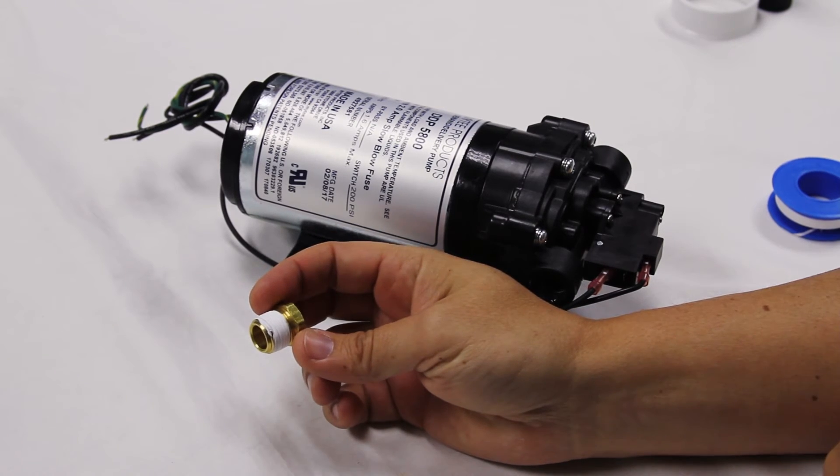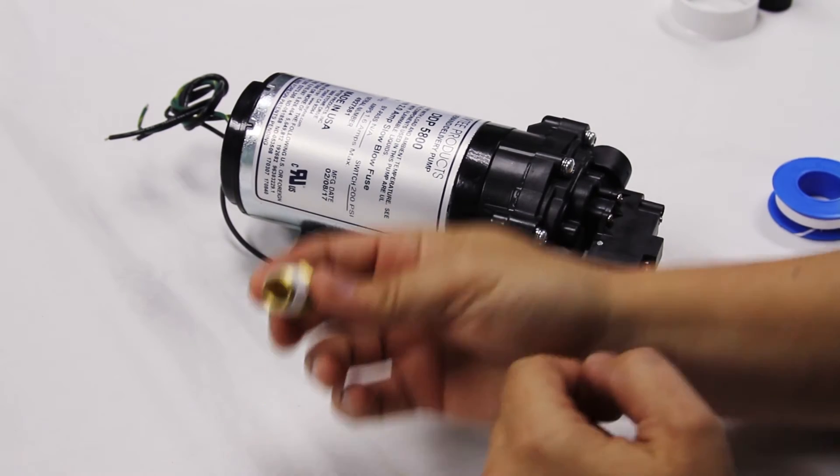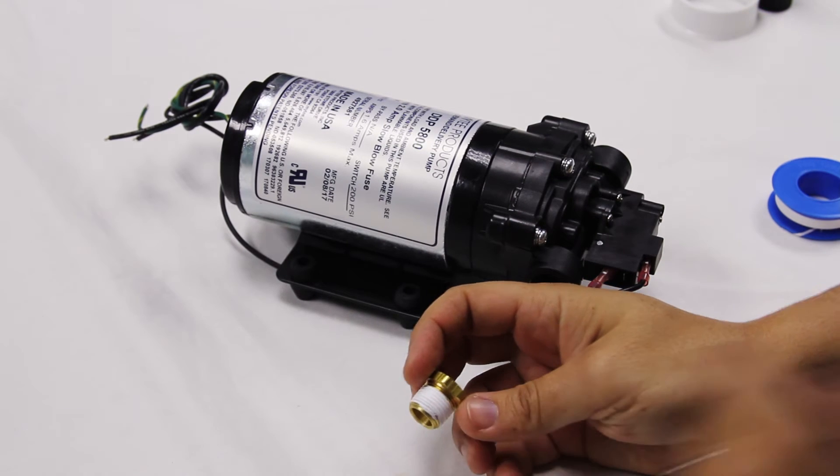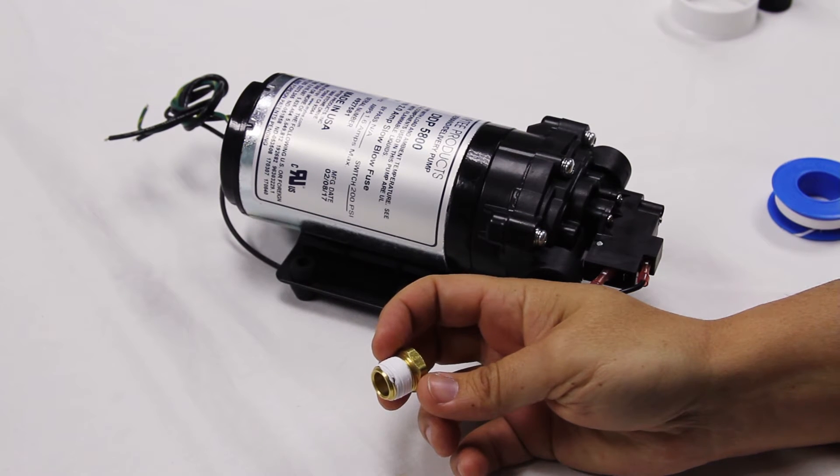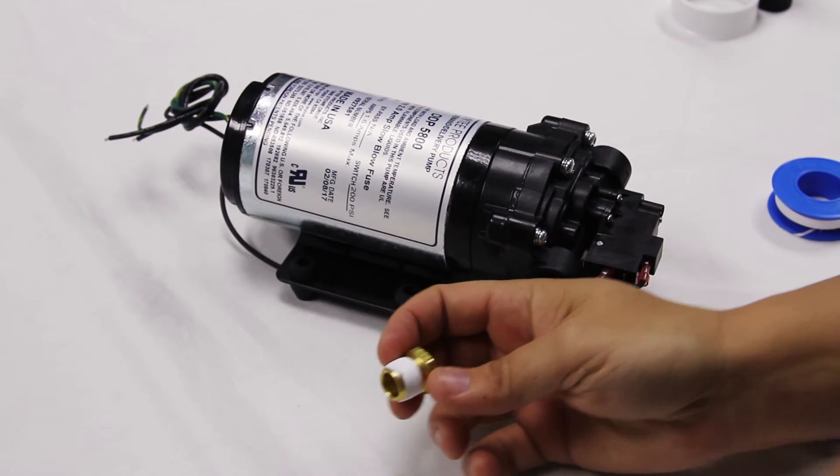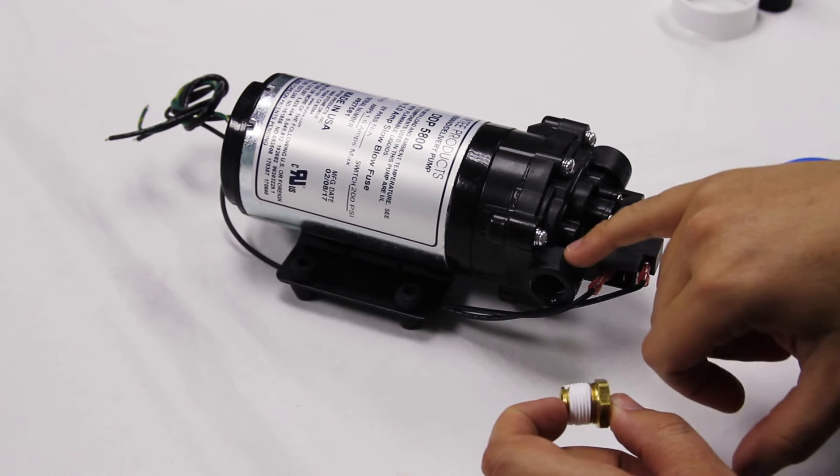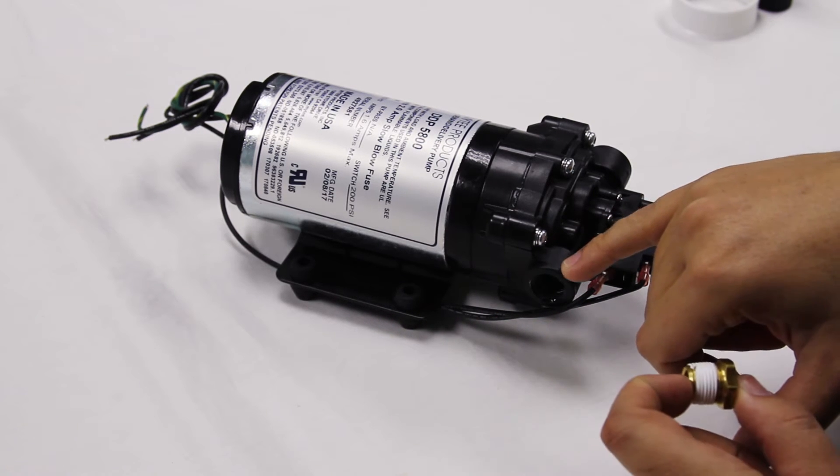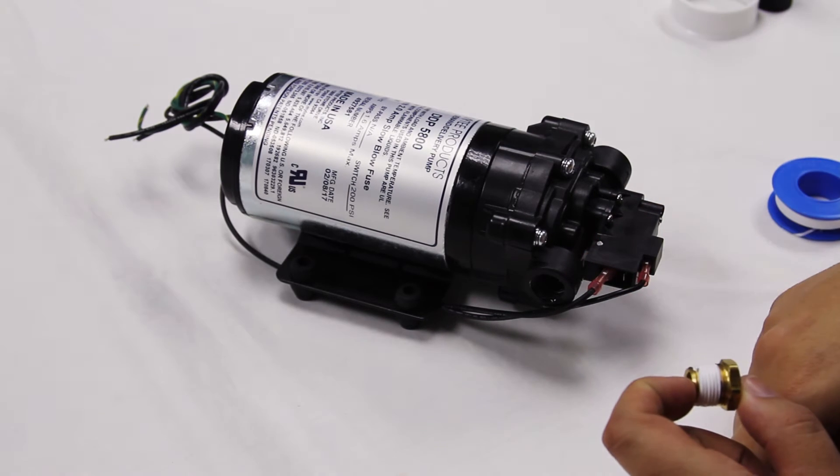But when you're putting brass into a plastic head, definitely avoid Teflon tape. It spreads the plastic out too much and almost inevitably you will crack your pump head right here where the threads are.